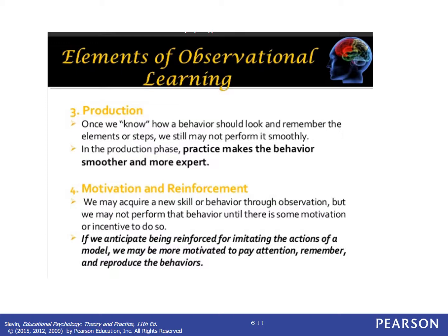If we anticipate that we're going to be reinforced for imitating the actions of a model, we may be more motivated to pay attention, remember, and reproduce behaviors. Going back to the robbing the cash register example, these steps follow for that as well — not only for positive learning but for learning outcomes we don't want to teach. So a friend has drawn attention to the behavior of robbing the cash register, shown how to unlock the door and secret the money away, and then motivation and reinforcement might come in with 'you're really cool, I want to hang out with you more.' Observational learning goes both ways — with positive and negative behavior — so we want to be careful what we're modeling to students.